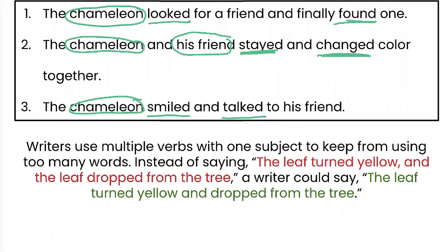Writers use multiple verbs with one subject to keep from using too many words. So instead of saying, the leaf turned yellow and the leaf dropped from the tree, a writer could say, the leaf turned yellow and dropped from the tree. The sentence in green has fewer words but still gets the point across.